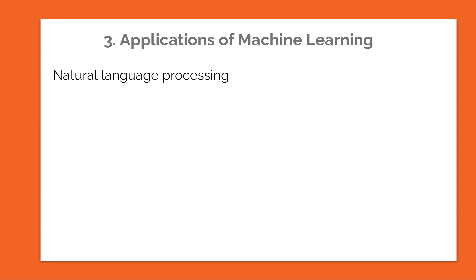But even before ChatGPT, things like Siri — the virtual assistant in iPhone — also use natural language processing. Also the Google virtual assistant and Alexa all use natural language processing for understanding and processing natural language and providing answers.